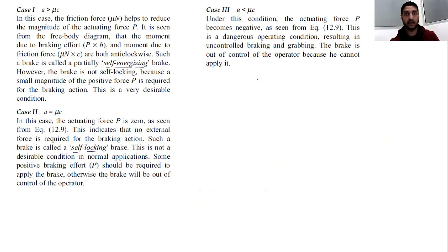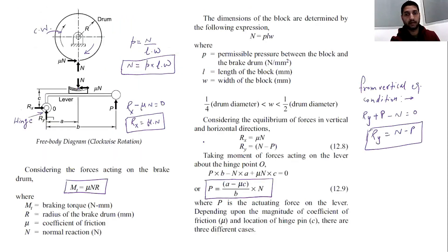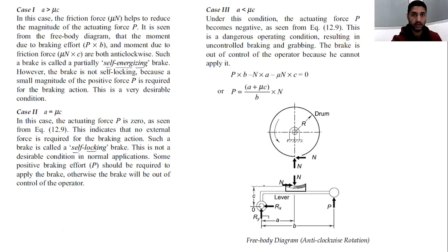These are the three cases arising from the formula P = (a − μc) / b × N. This is a very important formula. Now let us consider the second case: what happens if the drum rotates in the counterclockwise direction? Previously we assumed clockwise rotation and used the formula with a − μc.